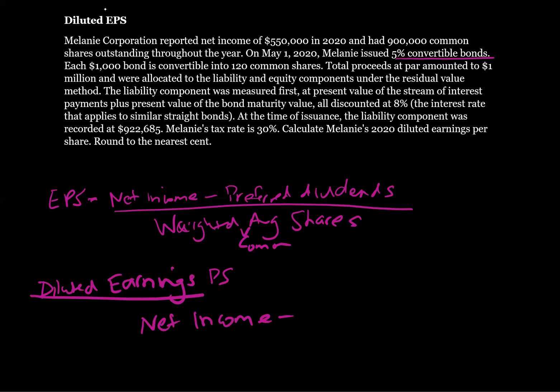How are we going to calculate the impact on net income? Well, if these convertible bonds were converted into equity, we wouldn't have had to pay out interest on them over the year. So how much interest did we pay out? We recorded the bonds at $922,685. So we're going to have $922,685 times the interest rate on the bonds. This is the 5% convertible bonds, but this is the hybrid instrument.